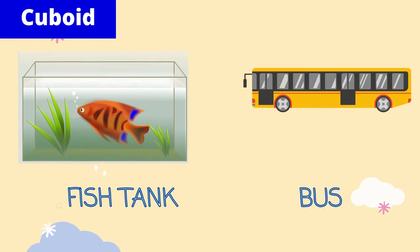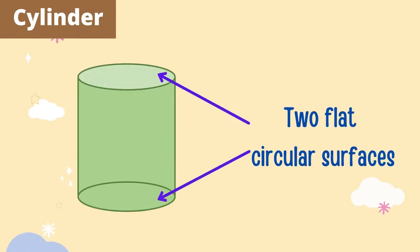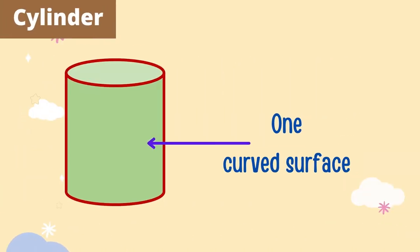Fish tank and a bus. We also have a cylinder shape. A cylinder has two flat circular surfaces and one curved surface. Examples include cylinder-shaped drums and a coffee mug.